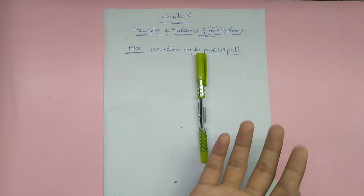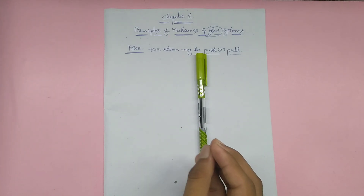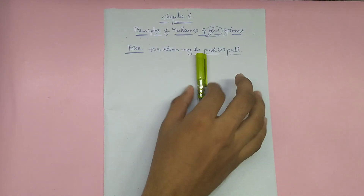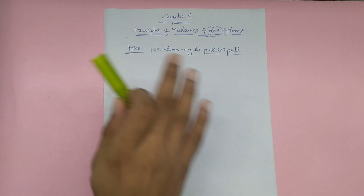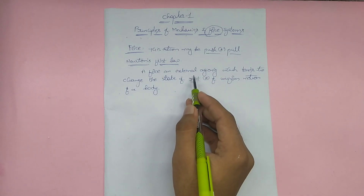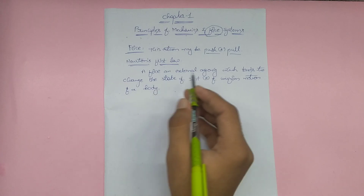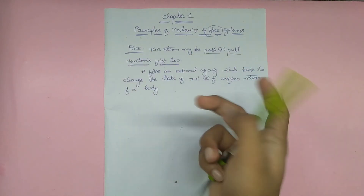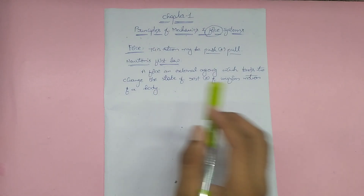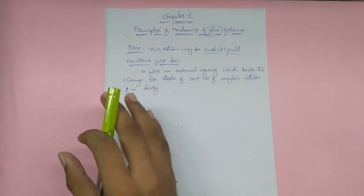Push and pull will change our objective — change the position, change the dimension, change the physical condition. Force is defined by Newton's first law: a force is an external agency which tends to change the state of rest or of uniform motion of a body. So force is an external agency — it tends to change the state of rest or uniform motion.